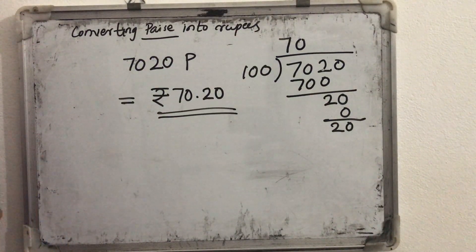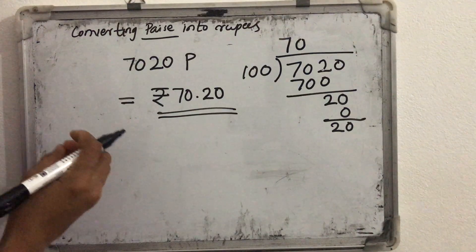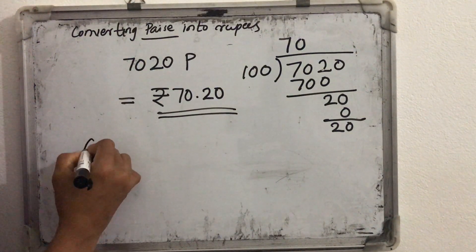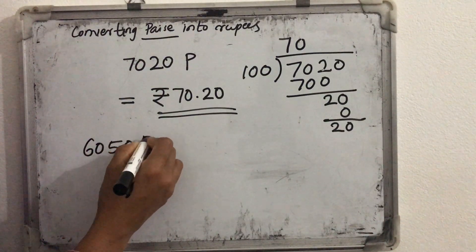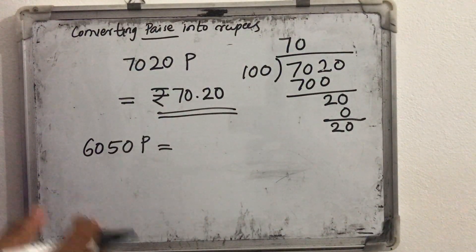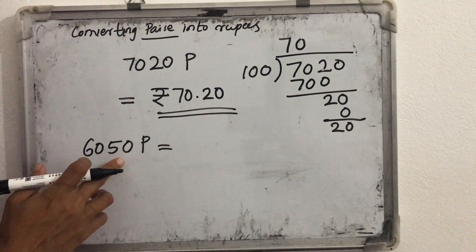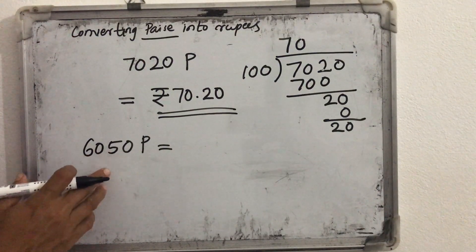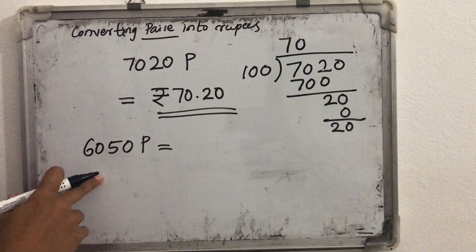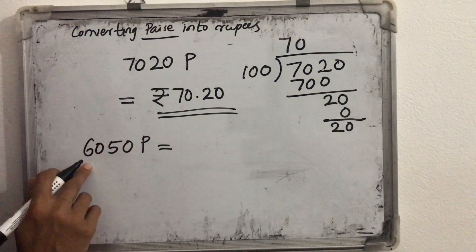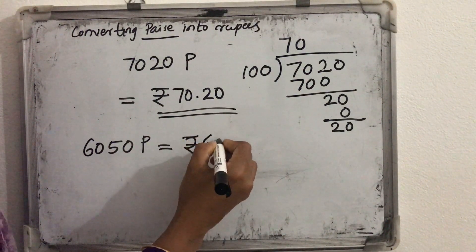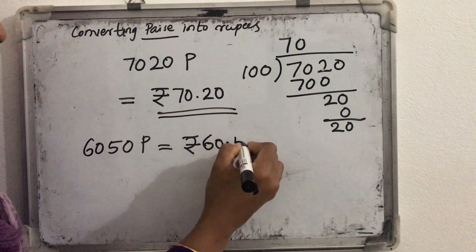In this way we can convert any paise into rupees. If the question is convert 6050 paise into rupees — now without doing this division also it is very easy. What we want to do? We want to insert the decimal point before the last two digits. So we can convert it like this — this will be 60 rupees and 50 paise.